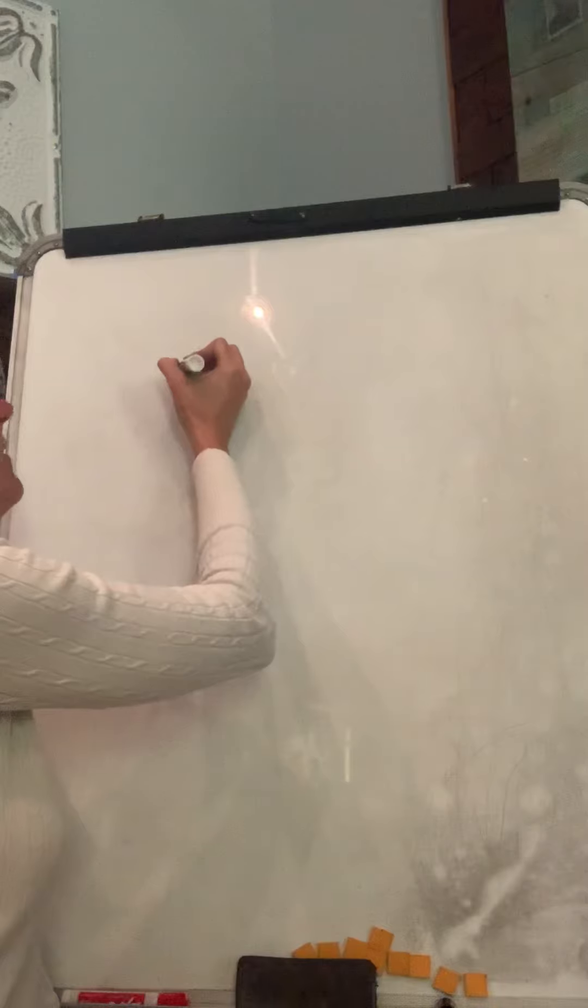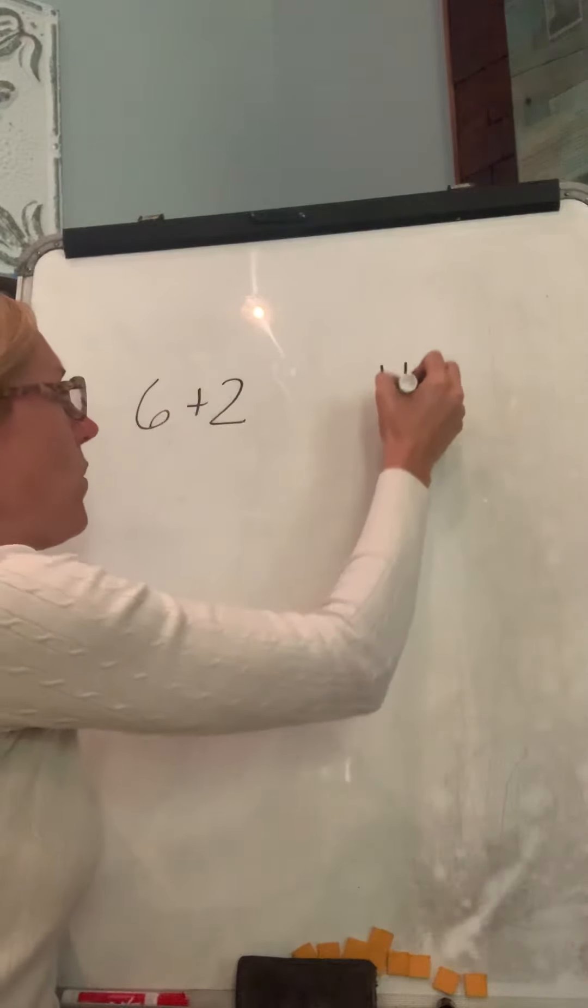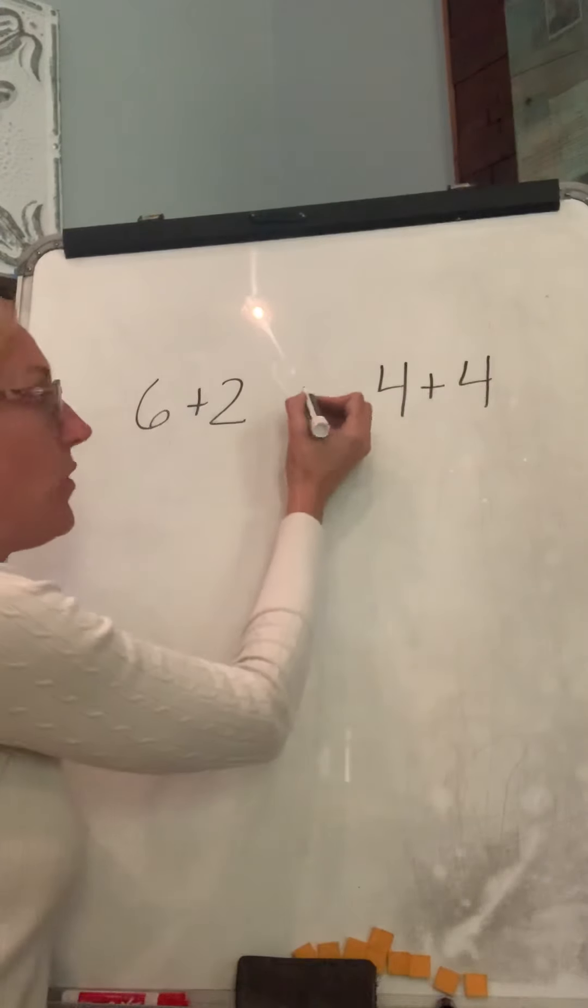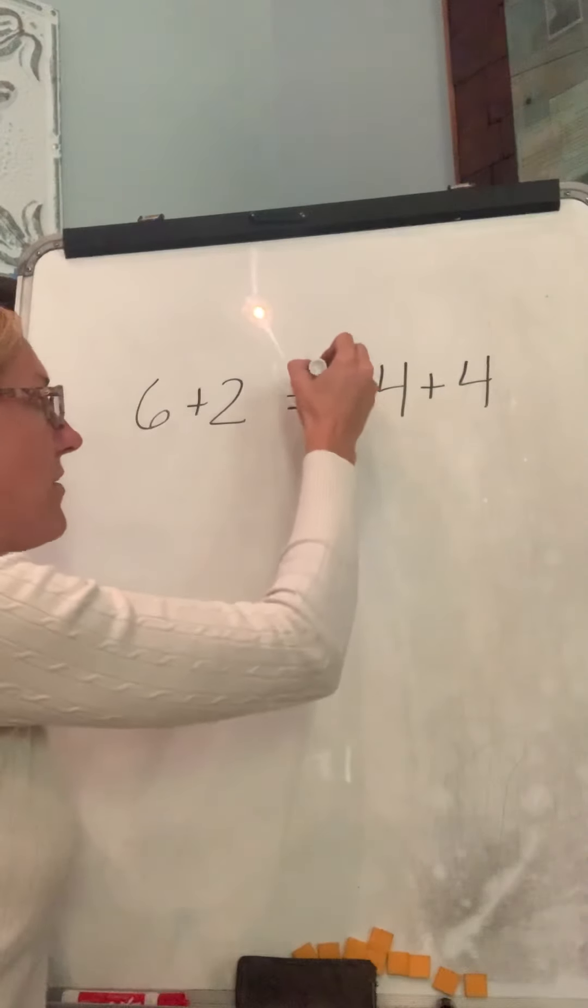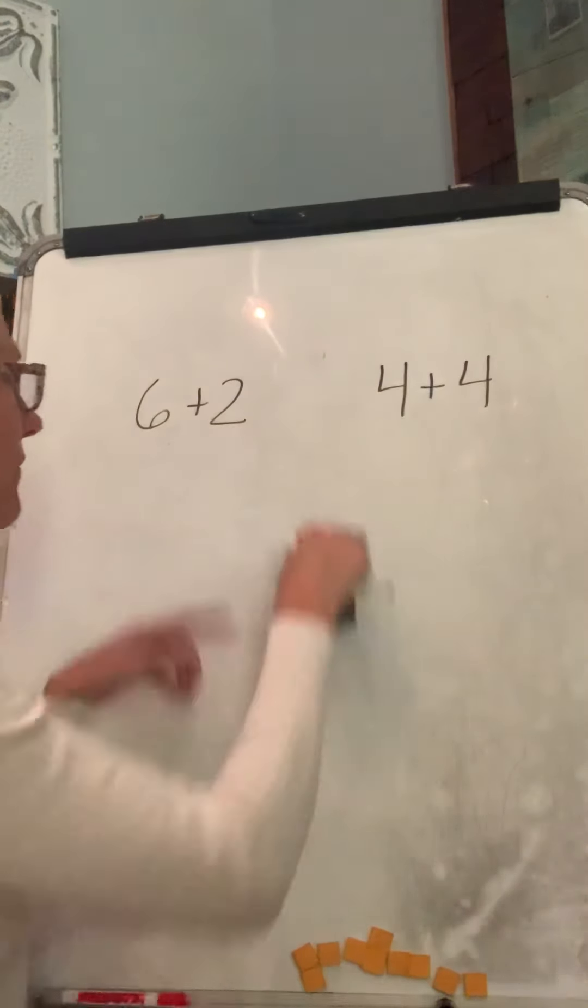I've got six plus two and four plus four. In the middle, if they're equal, put an equal sign. If they're not equal and you figure it out, put a line through it. They're not equal. Okay, so figure it out for this one.